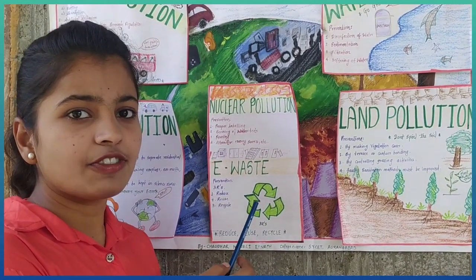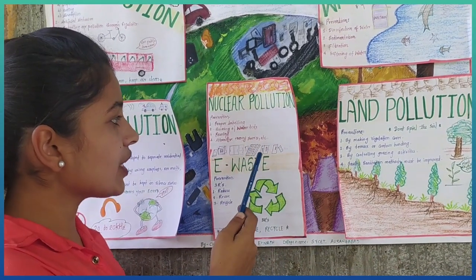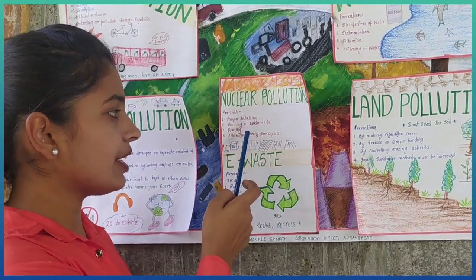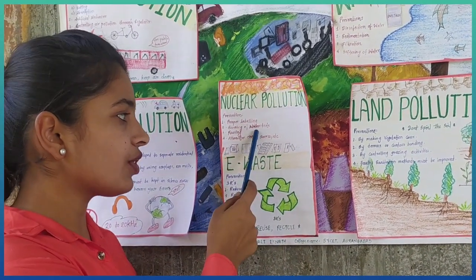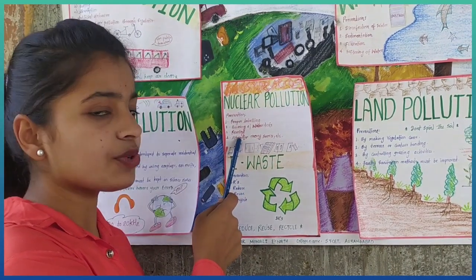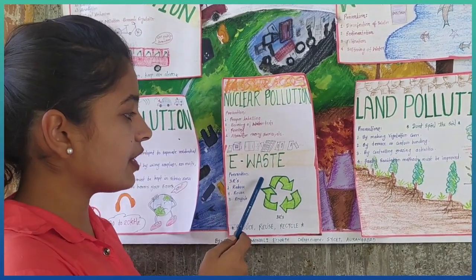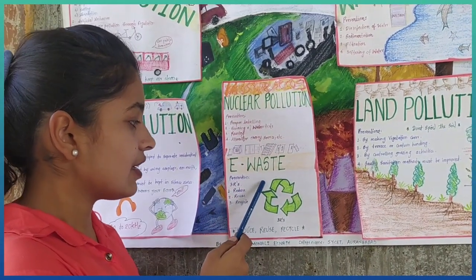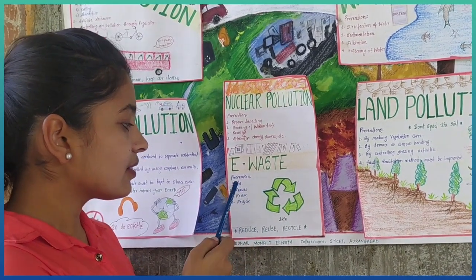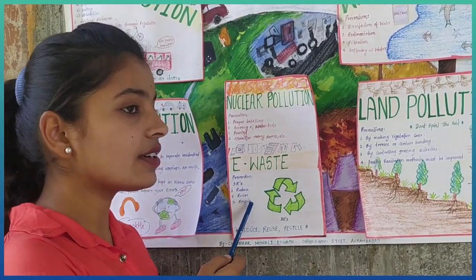The fifth type is nuclear pollution. Nuclear pollution can be controlled by proper labeling, banning of nuclear tests, reusing, and use of alternative energy sources, etc. The last type is e-waste. E-waste can be prevented by the three R's: reduce, reuse, recycle.